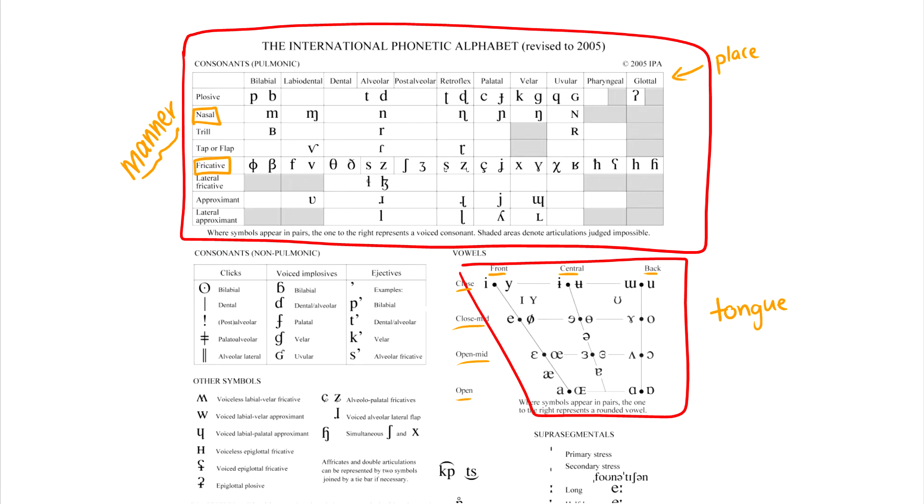The other stuff like clicks, implosives, ejectives, we won't worry about. In a future course, you may talk about them. Other symbols, suprasegmentals, things like that, we won't worry about. But you're free to look at these on your own.